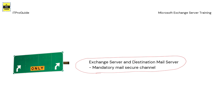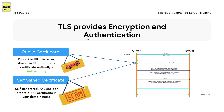TLS in Exchange Server provides both encryption and authentication. TLS helps encrypt communication, adding privacy to data communication. In addition to that it also provides authentication. To understand that, we need to know about public certificates and self-signed certificates. A public certificate is issued after verification from a certificate authority — it can be GoDaddy, DigiCert, or any other CA. For example, if I want to get a certificate for mail.m365proguide.com, I need to register with GoDaddy and verify the domain.